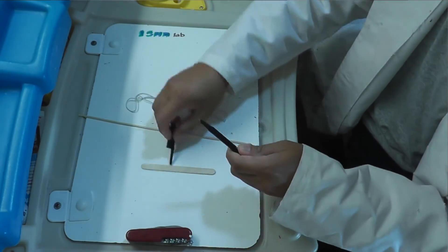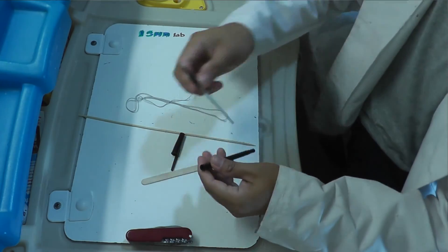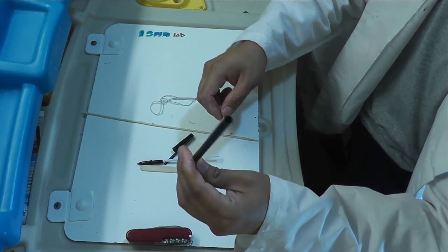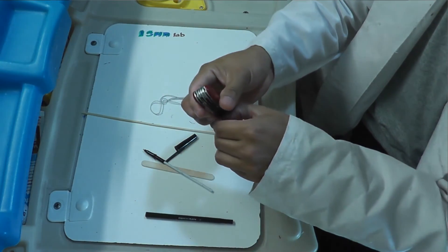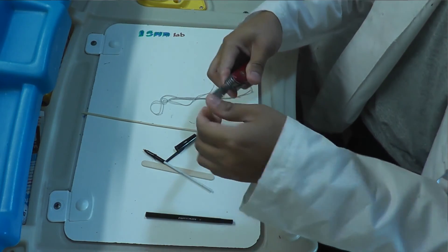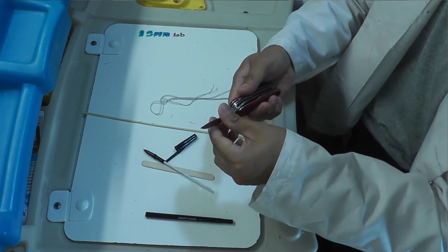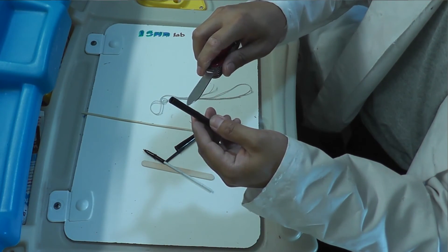Now, first step is remove the head of this pen, because we need the lower part of it. This one. And we need a knife to make a hole. But kids, be very very careful because this is very sharp. Ask assistance from your mom and dad.